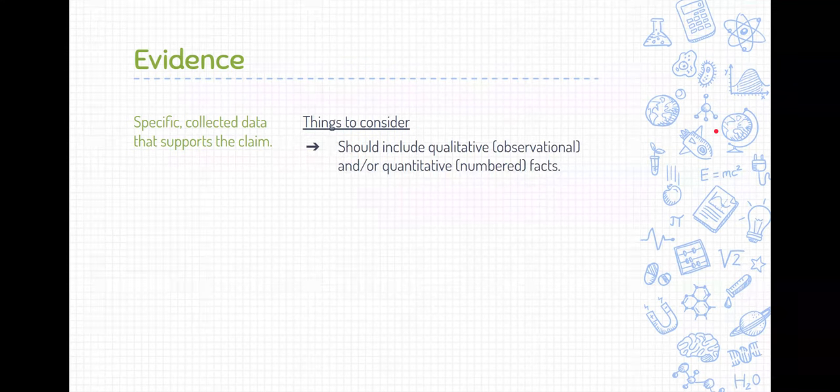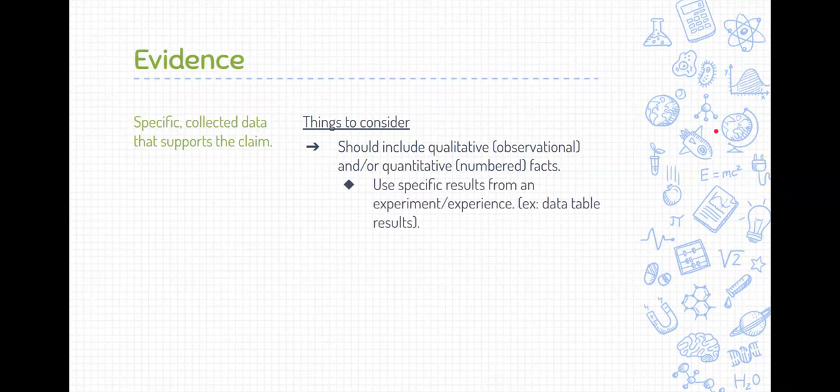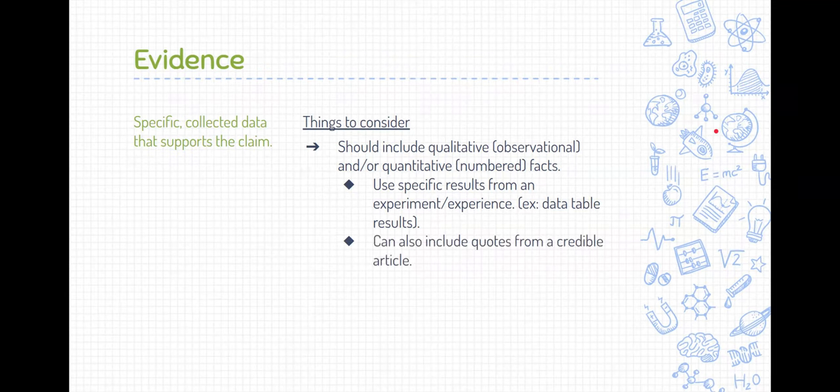Well, the data that's collected should include both qualitative and quantitative if possible. Qualitative data is just data that you observe during an experiment and quantitative is like data that you measure using a ruler or a thermometer or any type of measuring device and these are facts that you've collected in your experiment. So we should be using specific results from an experiment or an experience. Typically, this comes from data table results that we collect ourselves.